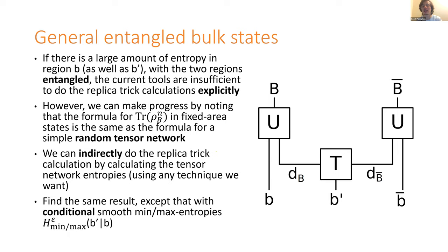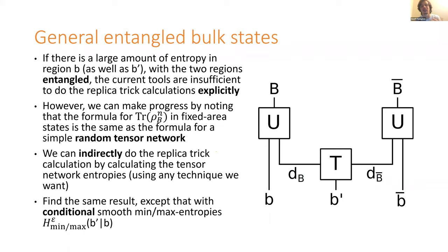The answer is exactly what we had before, except now rather than being about whether the smooth min and max entropy of little b prime sandwich the difference in areas, it's about whether the conditional smooth min and max entropy of little b prime conditioned on little b sandwich the difference in areas. This is analogous to the quantum extremal surface prescription, where for surface gamma one the von Neumann entropy involves all the stuff between, while for gamma two it's just the von Neumann entropy of little b — so the difference is the conditional entropy.